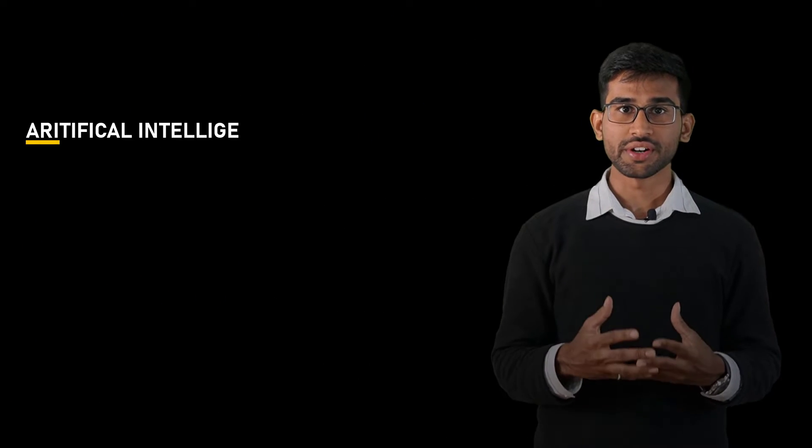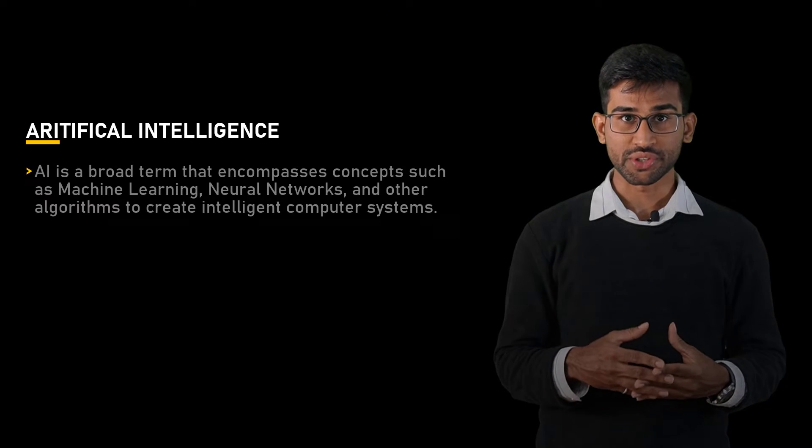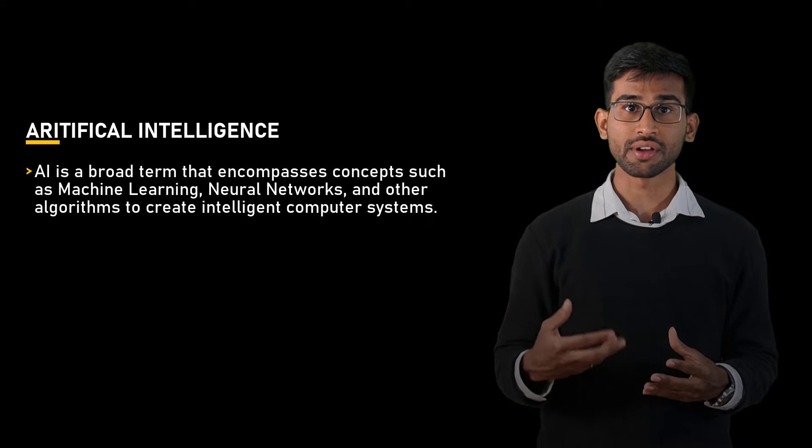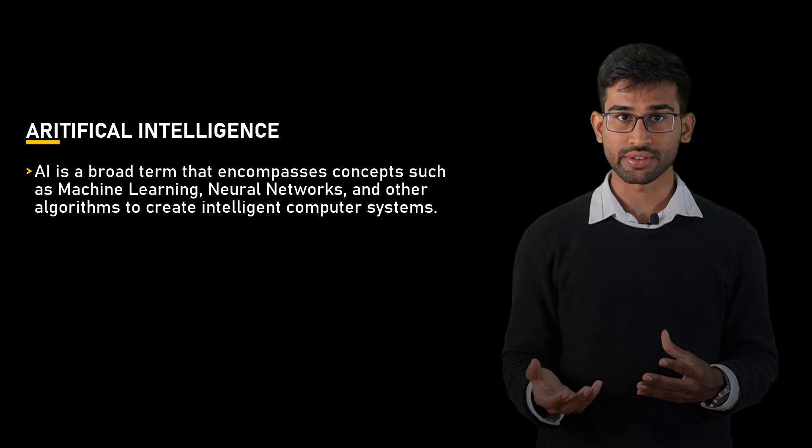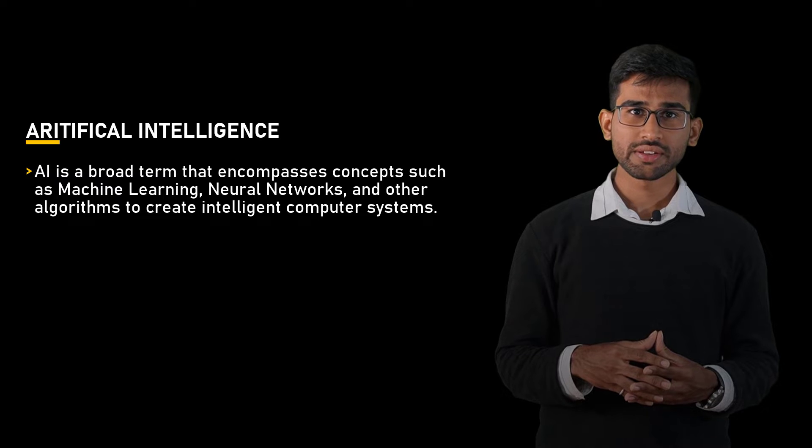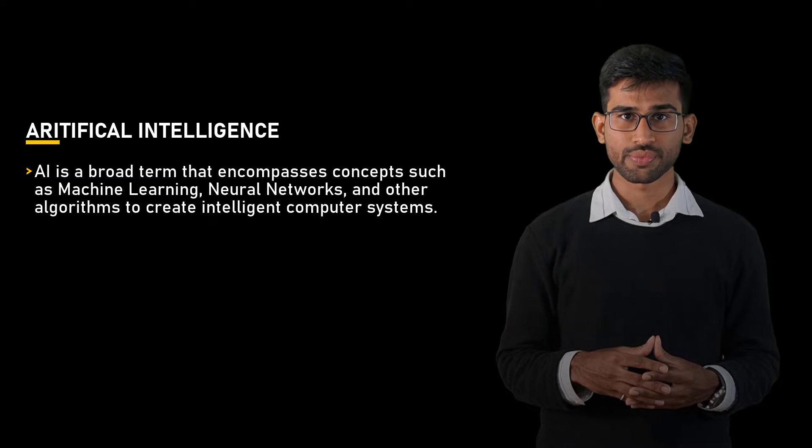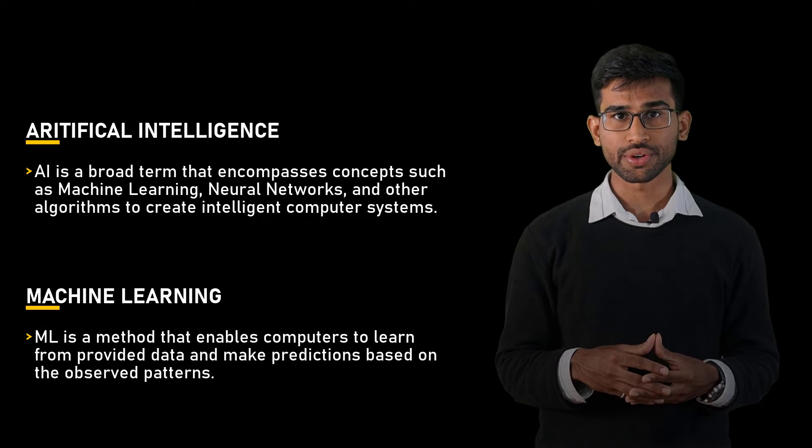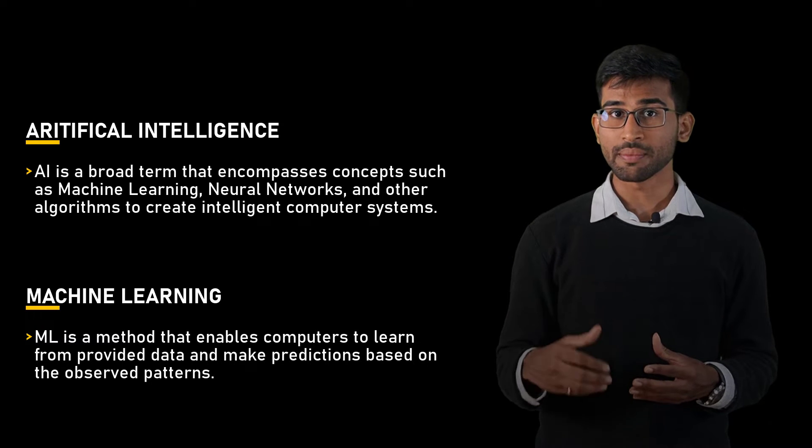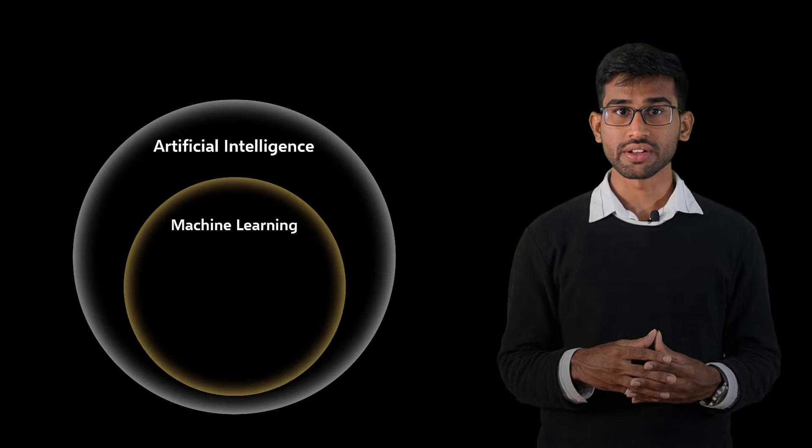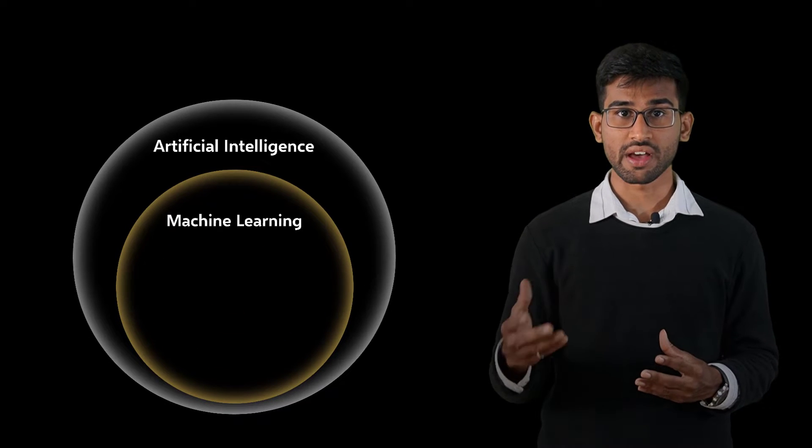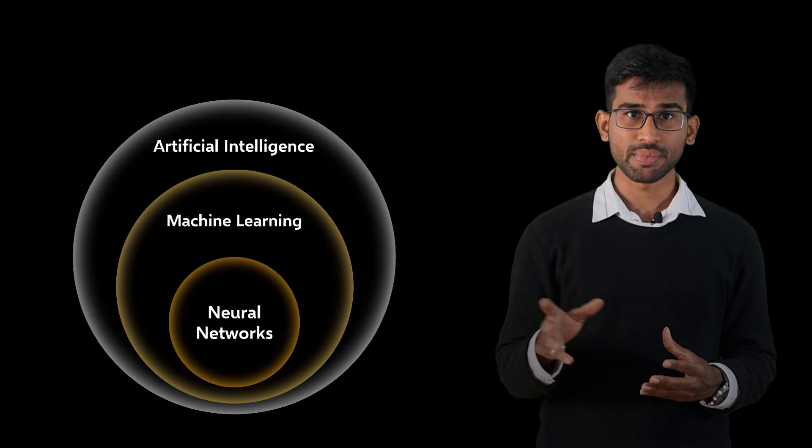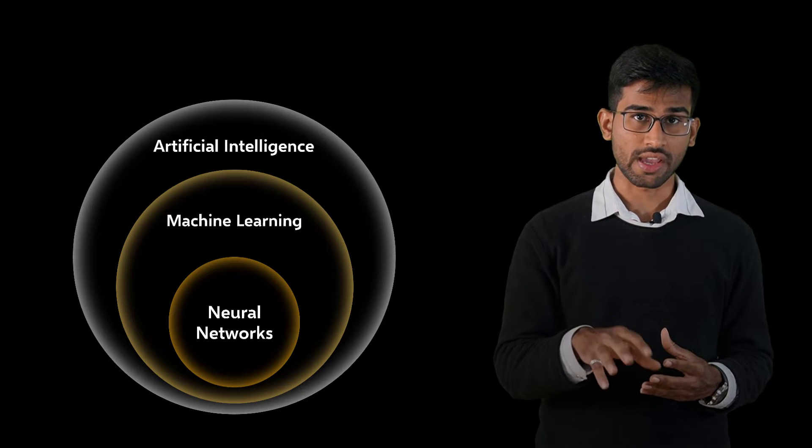AI is a broader term that encompasses ideas like machine learning, neural networks, and other algorithm techniques to create sophisticated computer systems. You might often hear these terms together as AI and ML. Generally speaking, machine learning is a method of allowing a computer to make predictions from finding patterns in the data. The concept of machine learning can be considered as a subset of AI, whereas a neural network can be understood as a more advanced machine learning algorithm.